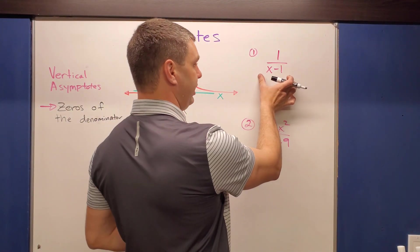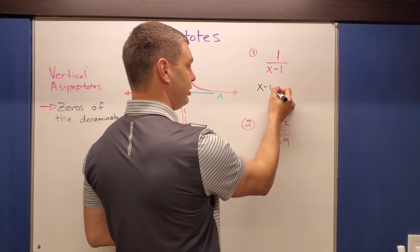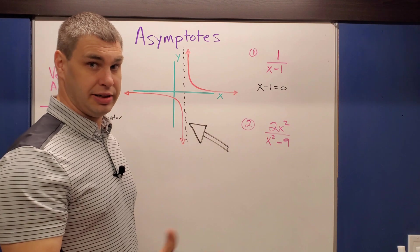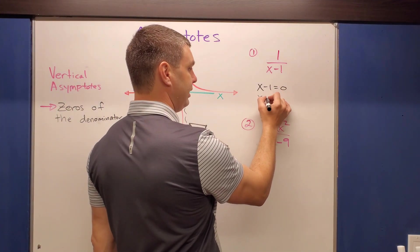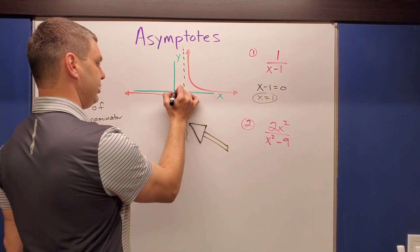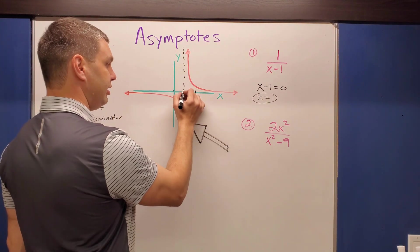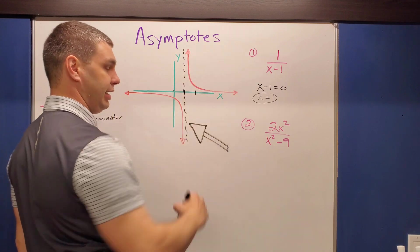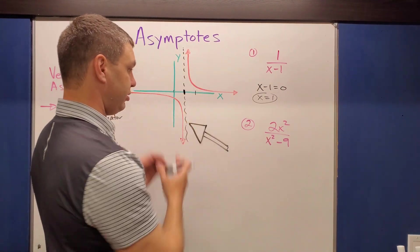I set the denominator equal to zero: x minus one equals zero. Adding one to both sides gives x equals one. At x equals one, that vertical line is the vertical asymptote you see in this graph.